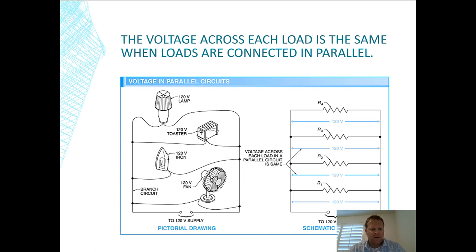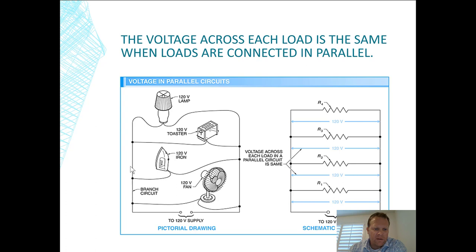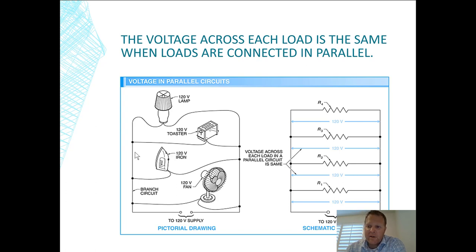With a 120-volt supply in a parallel circuit, there's no voltage drop concern like there would be in series, where the last thing in line would theoretically get less electricity. In parallel, every electrical load is directly connected to the line side. Wiring things in parallel is normally how this is done.